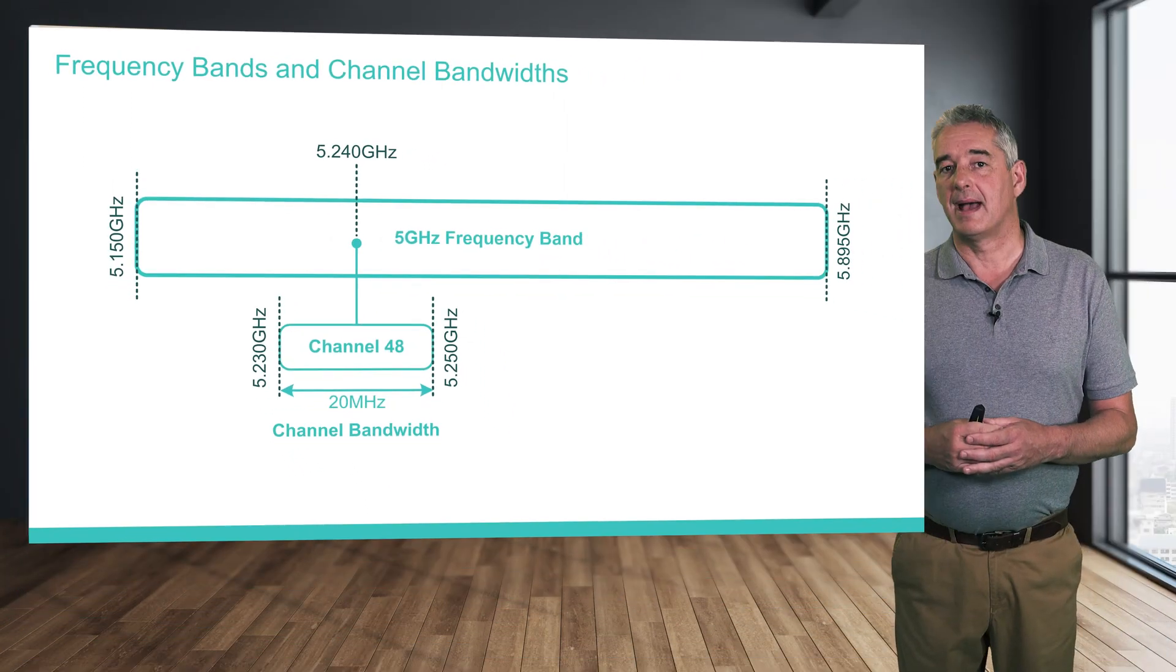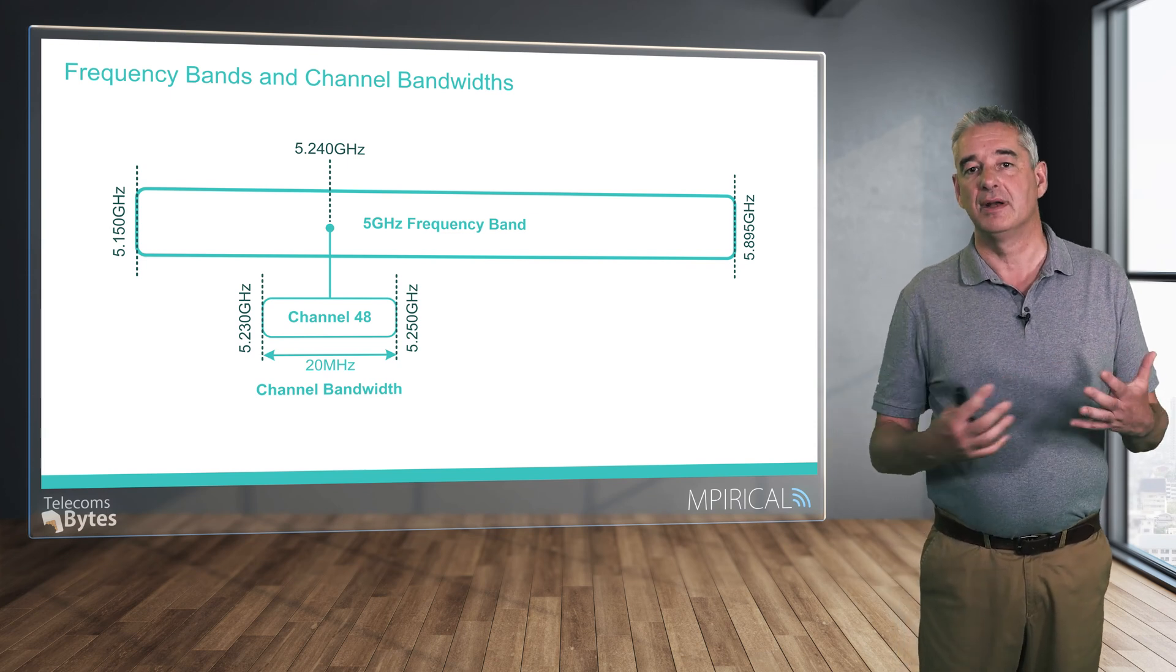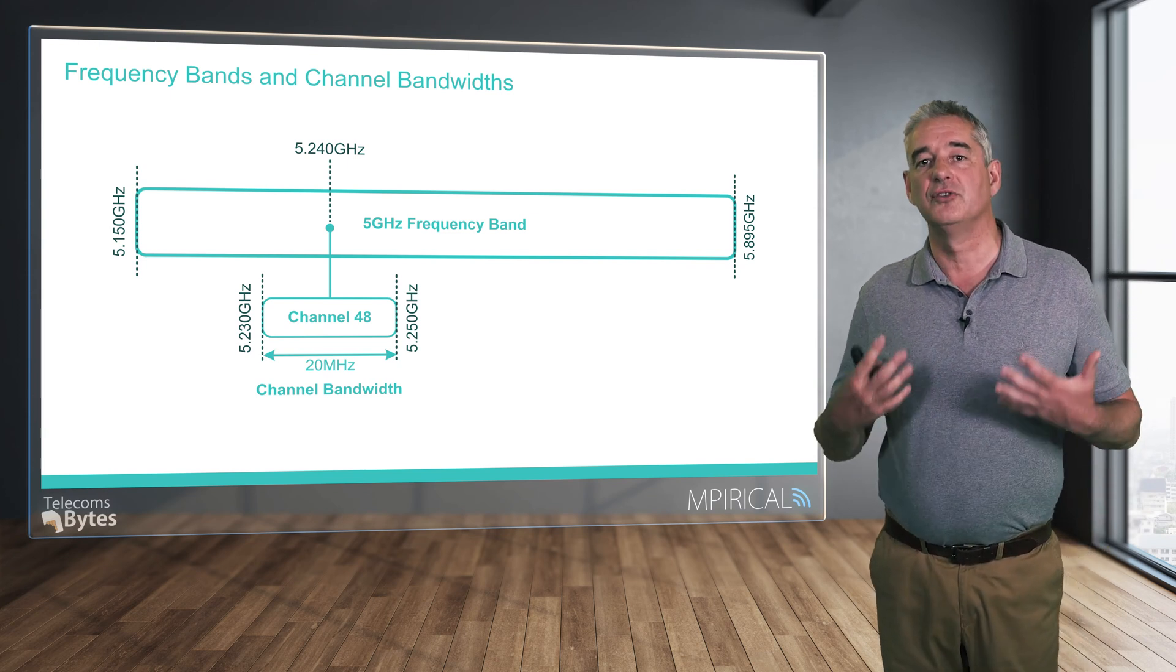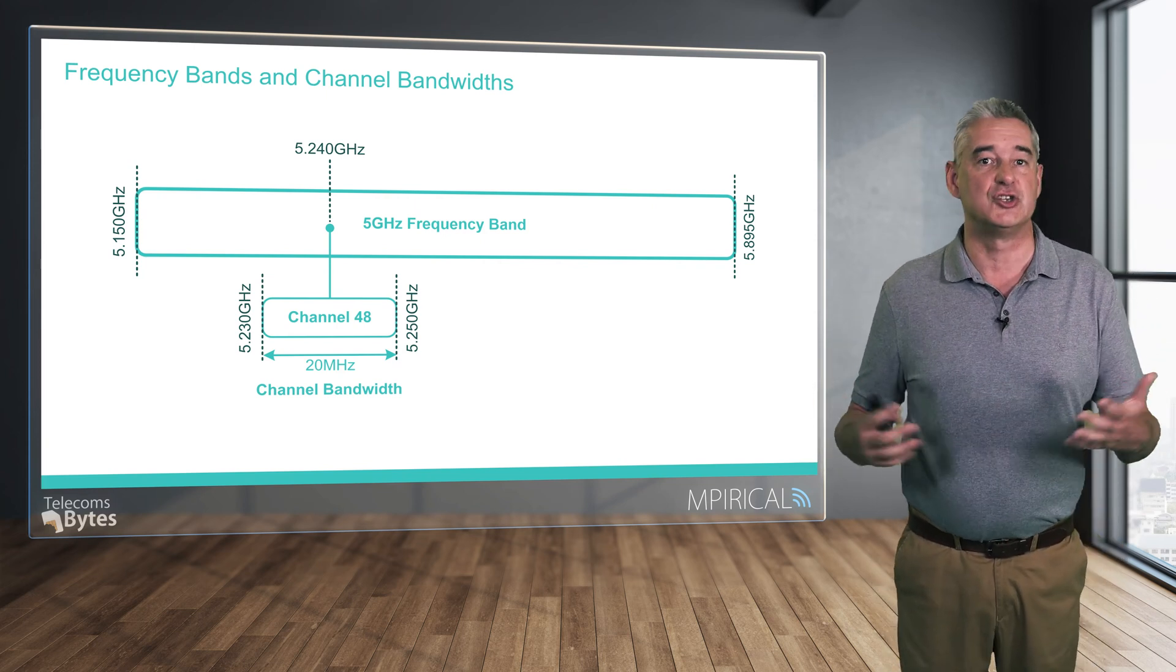Subdividing a frequency band into lots of channels has the advantage of enabling neighboring radio networks to operate on different channels, which ensures they do not cause interference to each other.